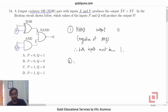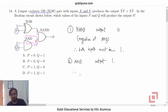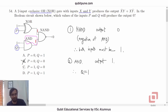Let us now go to the AND gate. What is its output? The AND gate's output is 1, so both inputs must be 1. Therefore, Q should be equal to 1, because the other input is already 1, so Q should also be 1. Now Q is 1, so options B and C are eliminated because their Q is 0.